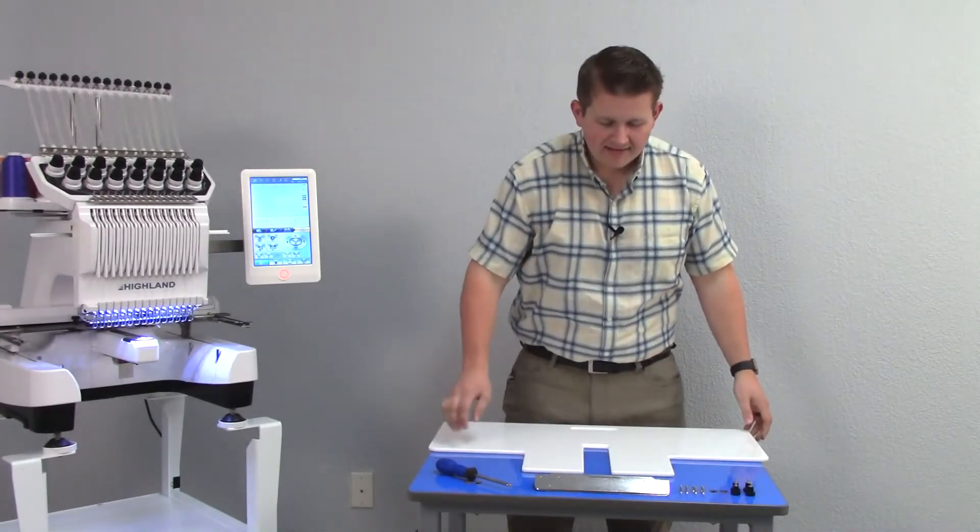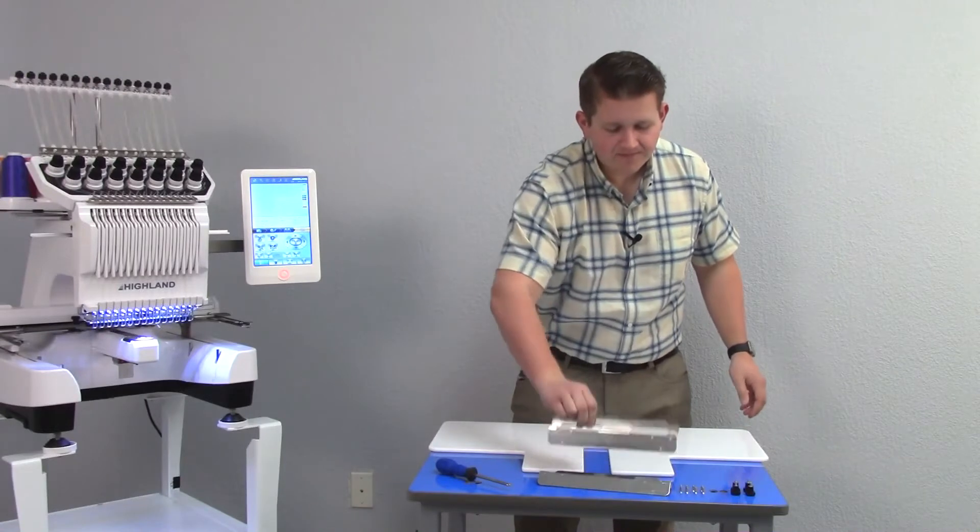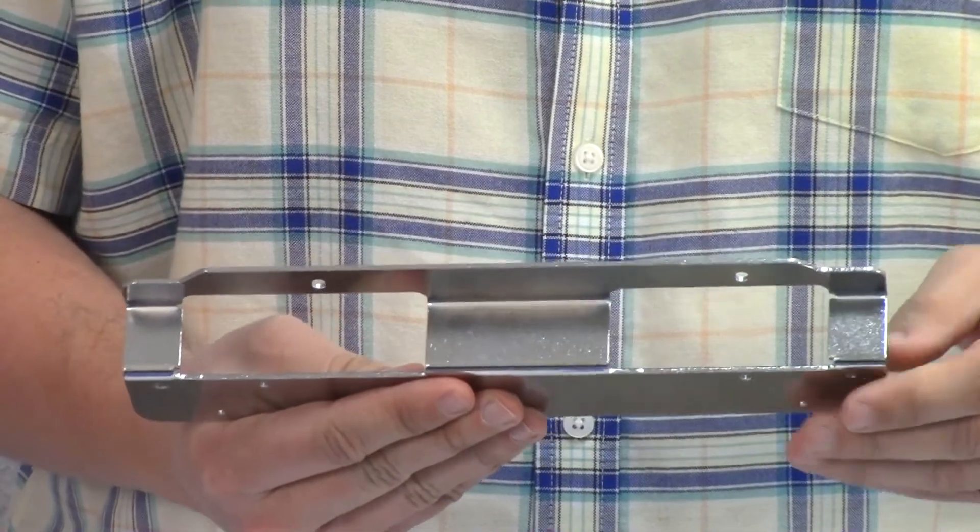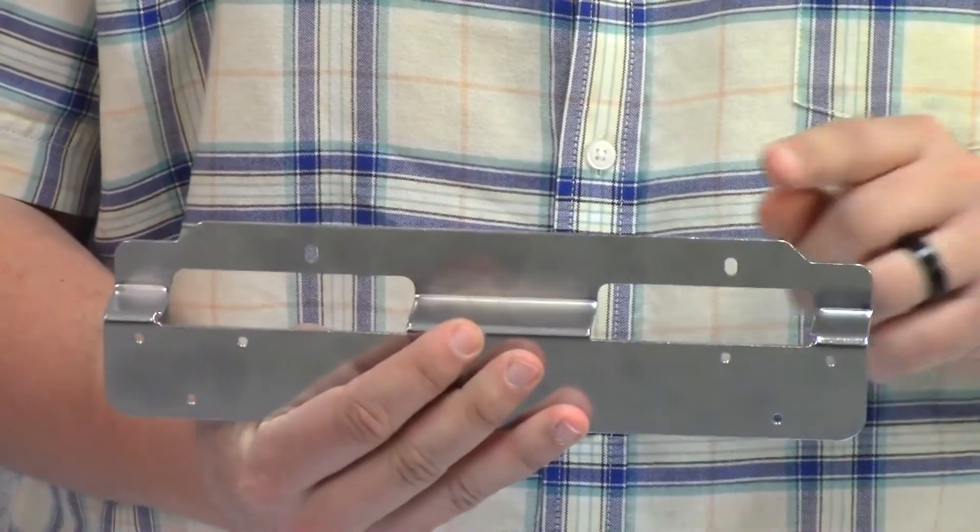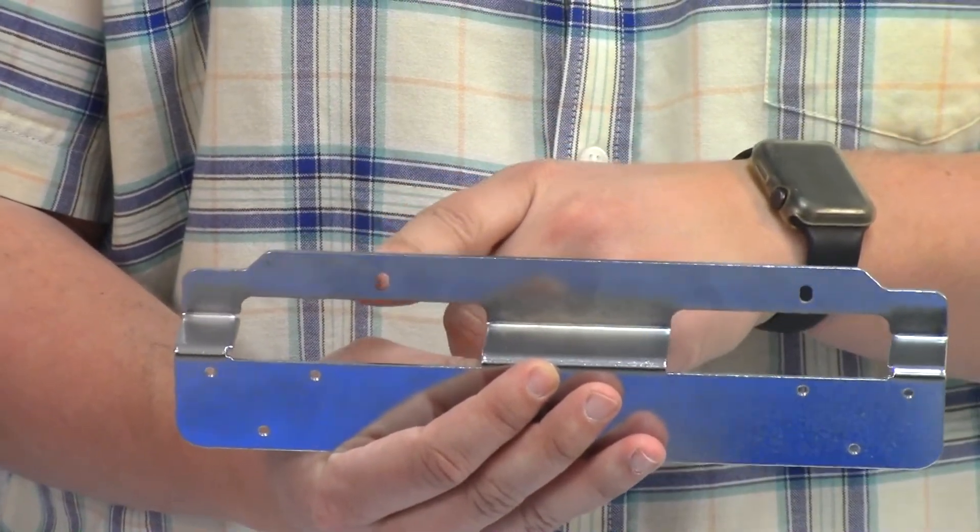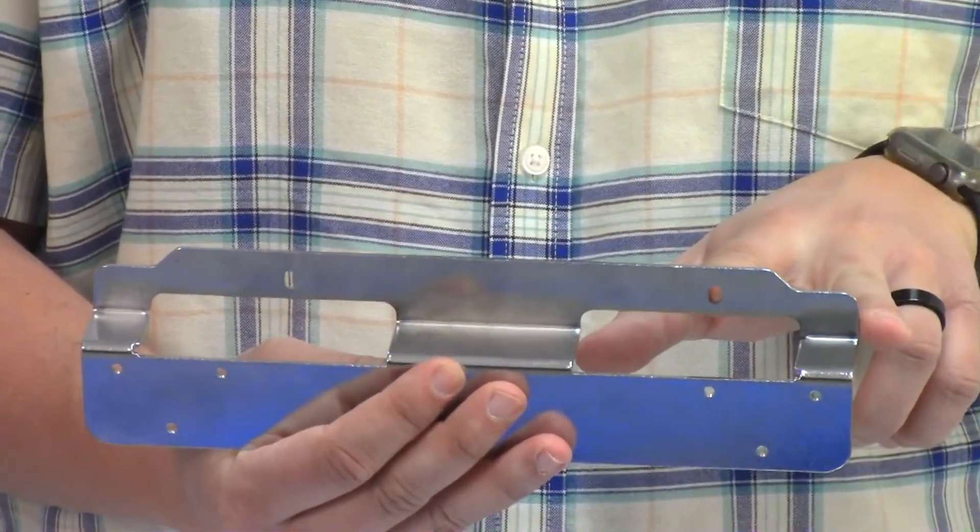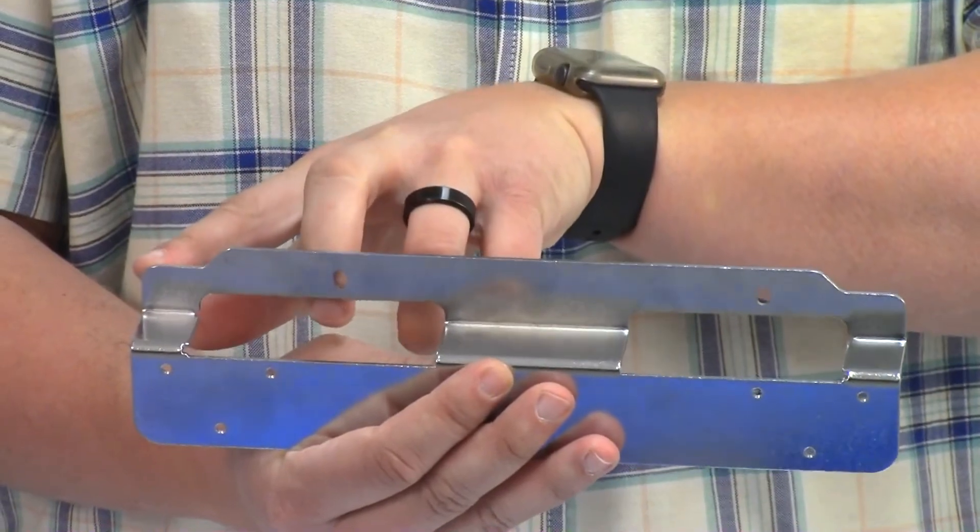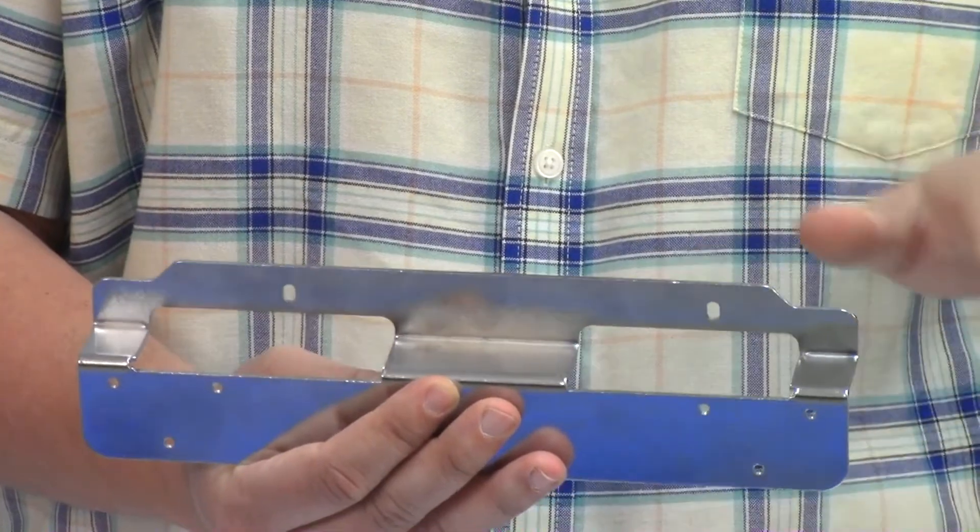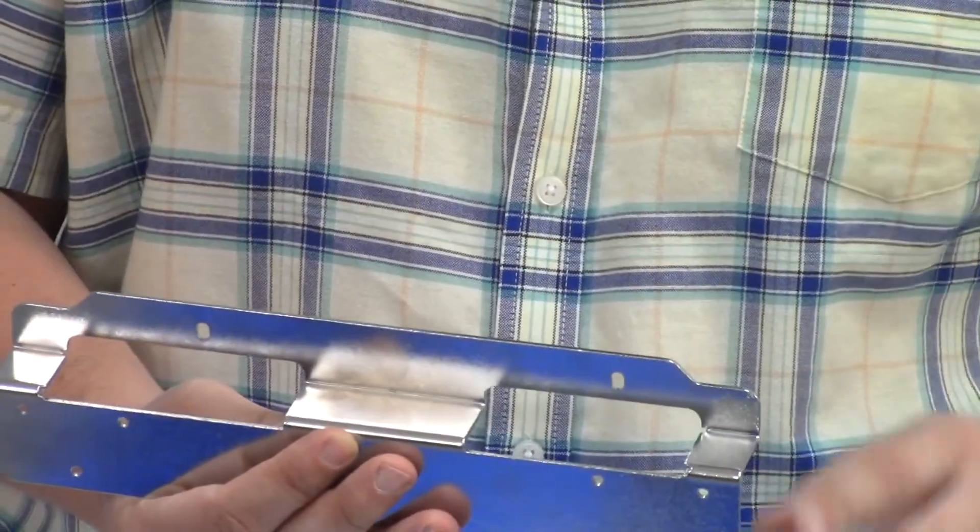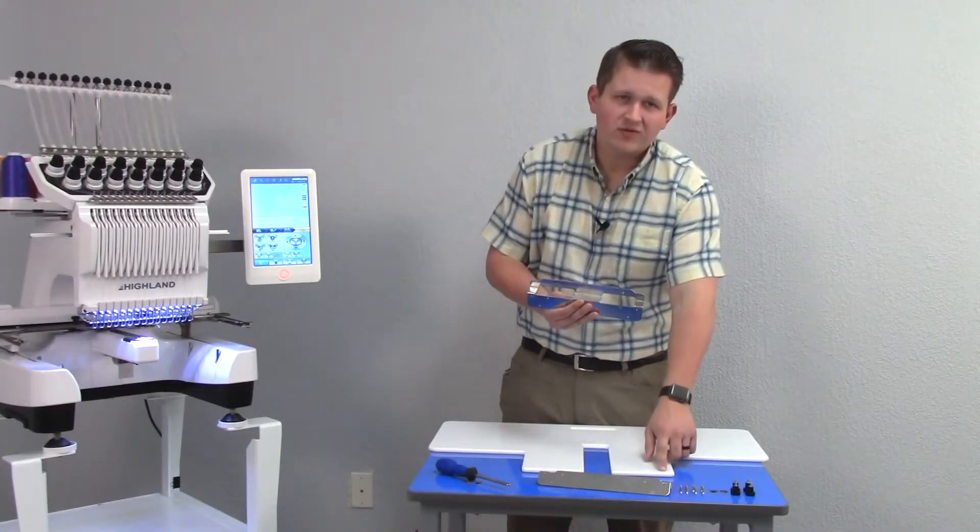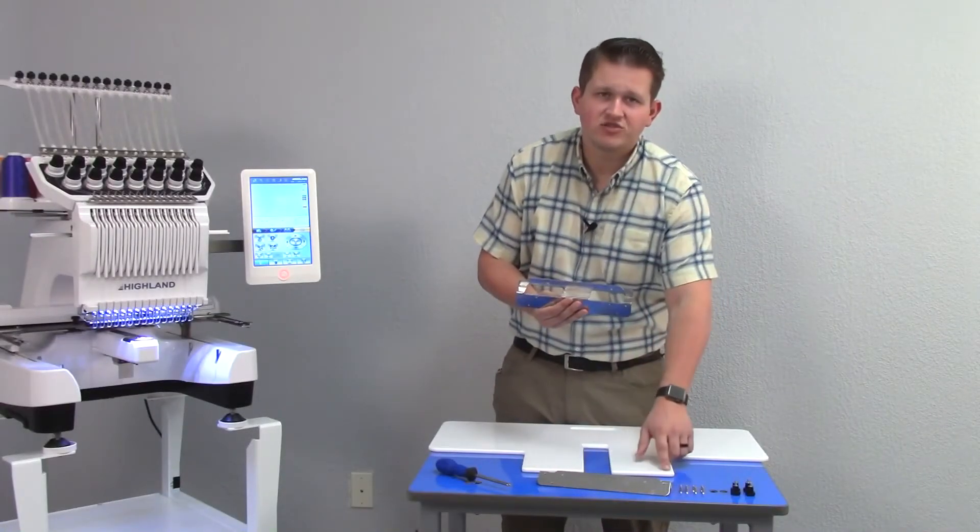When looking at our table brackets, each bracket goes on a specific side of the table, determined by the positioning of these screw holes. You'll notice the screw holes are different distances from the end of the table bracket. The side of the bracket which has this screw hole closer to the end is always positioned so that the shorter distance is towards the back of the table, which is this short side.